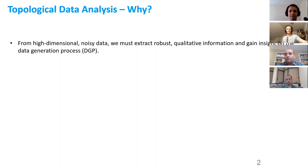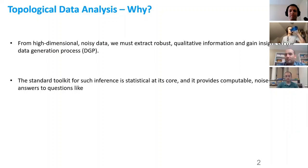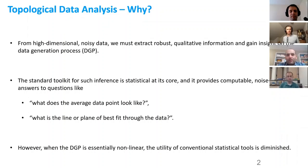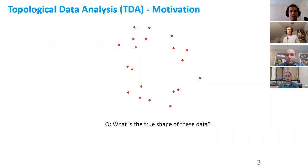What is TDA? TDA is usually used to extract robust qualitative information and gain insight on the data generating process when the data is high dimensional and noisy. The standard toolkit for such inference is statistical, providing computable noise-tolerant answers to questions like what does the average data point look like, or what is the line or plane of best fit. However, when you have a nonlinear data generating process, the utility of these conventional tools is diminished. TDA comes in here.